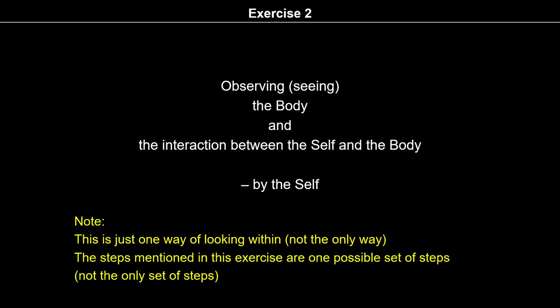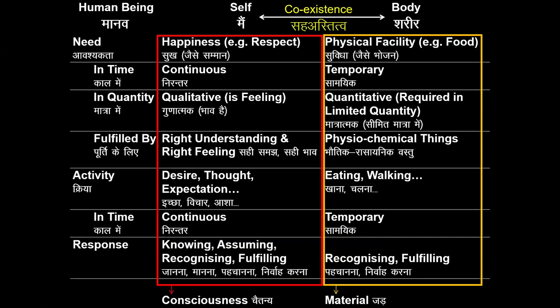In Exercise 2, we are trying to observe the body and the interaction between the self and the body. When I say observation, it means I am directly observing this interaction — directly observing myself, directly observing the body. In UHP 1 or UHP 2, we all went through the proposal of a human being as a coexistence of self and body. All of us received this proposal during the UHP 2 workshop.